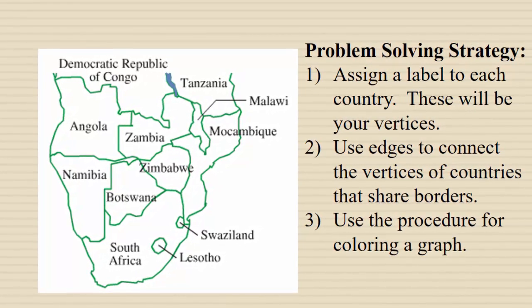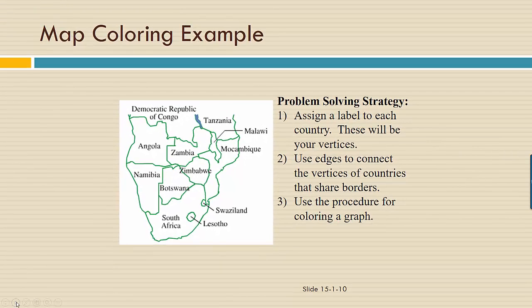Our strategy will be to first assign a label to each of the countries that will represent our vertices. Then we're going to use edges to connect the vertices of countries that share borders. Finally, we'll use the procedure for coloring a graph.